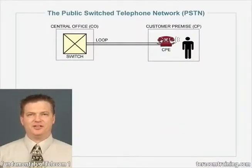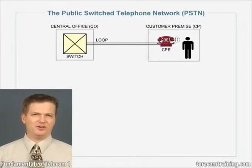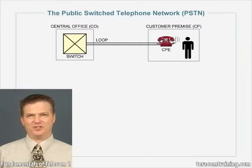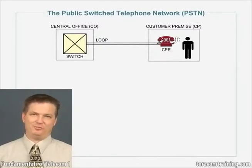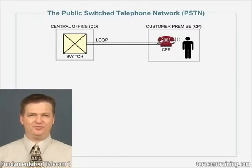Let's jump right in and get started with a basic model for the public switch telephone network, the PSTN. If I wanted to draw a picture of the PSTN, I'd probably start with a telephone. Telephones are connected to telephone switches using two copper wires. The building that contains the telephone switch is called a central office, and the building that contains the telephone is called a customer premise. So you could call the telephone a piece of customer premise equipment if you really wanted to.